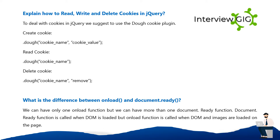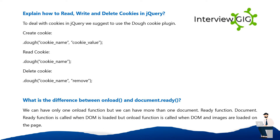How do you read, write, and delete cookies in jQuery? To deal with cookies in jQuery, it is suggested to use the Dough cookie plugin. Create cookie: dough(cookie_name, cookie_value). Read cookie: dough(cookie_name). Delete cookie: dough(cookie_name, 'remove').